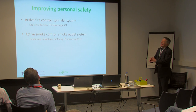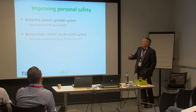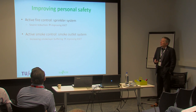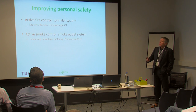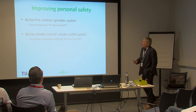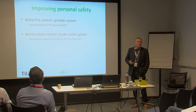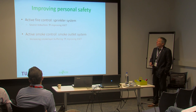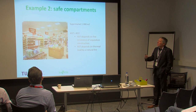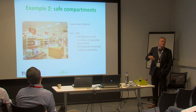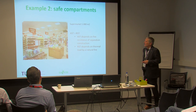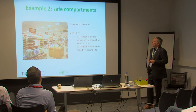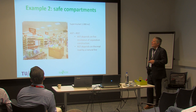To achieve a slightly higher safety level in this case, you can think about active fire control with a sprinkler system, active smoke control with a smoke outlet system to increase smoke layer buffering, or theoretically also compartmentation — though that's not desirable for a market hall. We do a lot of projects with the ASET/RSET definition, and we can do the same for compartment walls.